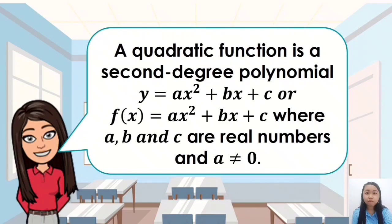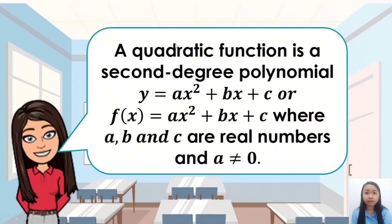Once a becomes equal to 0, the quadratic term ax squared will be equal to 0. So the remaining terms will be bx plus c, and y is equal to bx plus c is not a quadratic function — it is now a linear function. So remember that a must not be equal to 0.